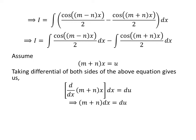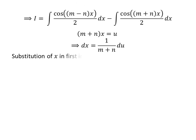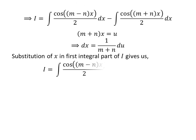As the derivative of (m + n)x is (m + n), so (m + n) dx equals du. Taking (m + n) to the right-hand side gives us dx equal to 1 upon (m + n) times du. Substituting (m + n)x by u in the integral of cos((m + n)x) upon 2, we get I equal to the integral of cos((m − n)x) upon 2 minus the integral of cos(u) upon 2.